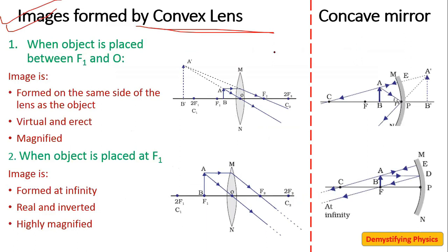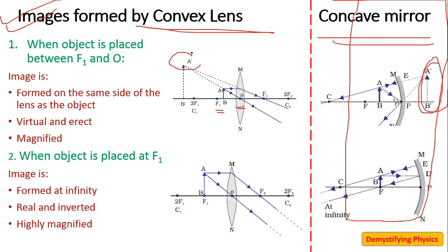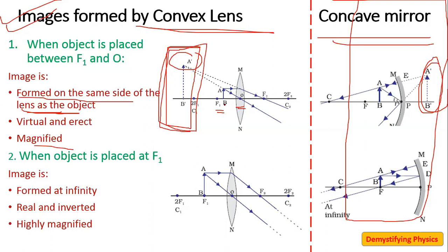Now, image formation by convex lens. This is similar to the concave mirror, so do revise mirror ray diagrams at home. First case: when the object is placed between F1 and O — just like a concave mirror with object between pole and focus. One ray parallel to the principal axis passes through the focus; the second ray passes through the optical center. Extending these two rays backwards gives a magnified, virtual, erect image on the same side as the object.